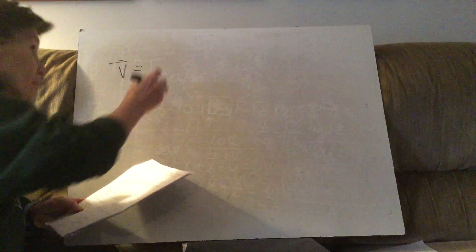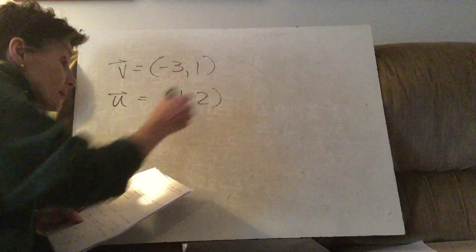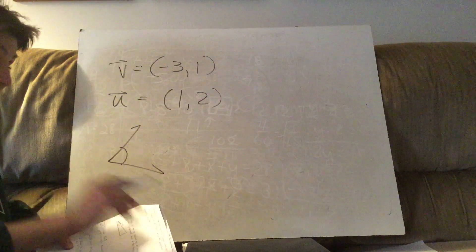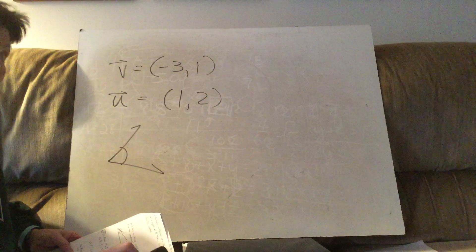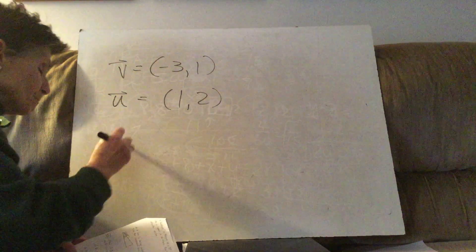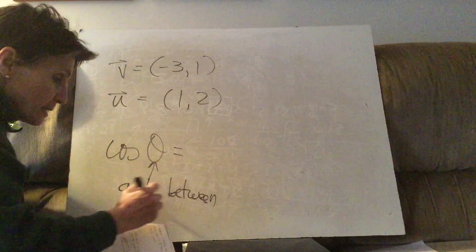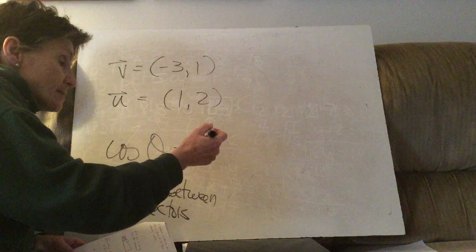We're going back to section 6.2, problem 2, which says find the angle between two vectors. So we have two vectors and they form an angle. There is a formula for this you'll want to write down and highlight: the cosine of the angle between the vectors — this is what we're looking for — the cosine of that angle is the dot product.